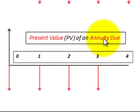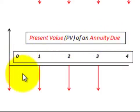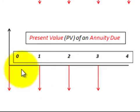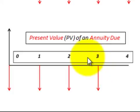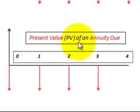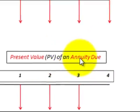Now let's look at a present value of an annuity due. The key terminology here is annuity due, which means we've got four equal payments but they're at the beginning of each year or period — beginning of year one, beginning of year two, beginning of year three, and beginning of year four. We discount those back to determine their present value using a present value of an annuity due function or table.